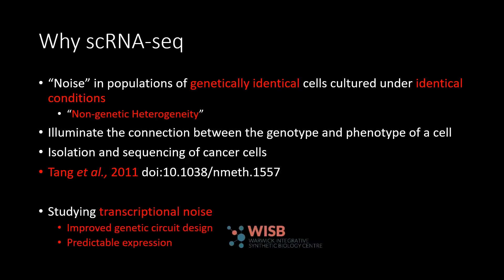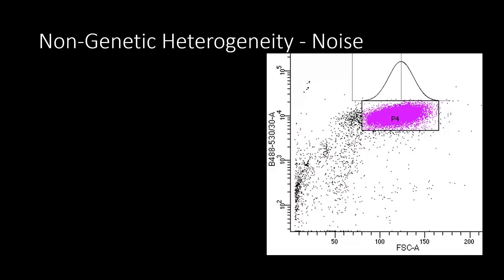To shine more light on what we mean by non-genetic heterogeneity: if you take a FACS plot of identical cells cultured under identical conditions, you still see quite a variety of phenotypes. We're looking at forward scatter, which is the size of the cell, and you can see that varies, as well as a construct we've transfected expressing GFP. The expression of that construct also varies, giving quite a dispersed population. That can be caused by transcriptional noise, but also biological and non-biological sources, including technical noise from the instruments and methods used to measure those parameters.